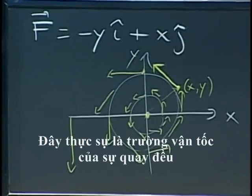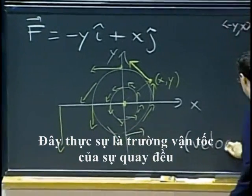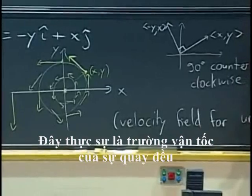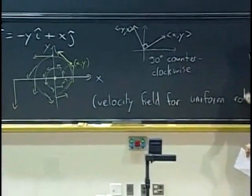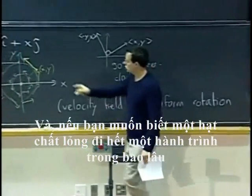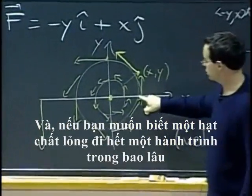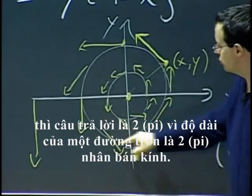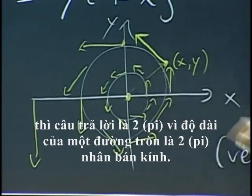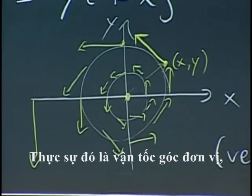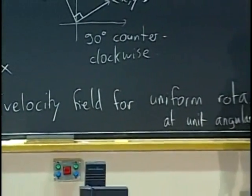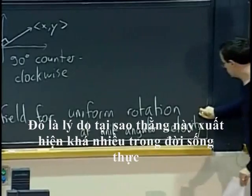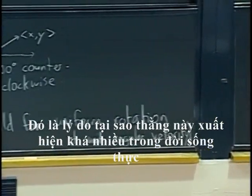it would correspond to a fluid that's just going around the origin in circles, rotating at uniform speed. So this is actually the velocity field for uniform rotation. And, if you figure out how long does it take for a piece, a particle of fluid to go all the way around, well, that will be actually 2pi because the length of a circle is 2pi times the radius. So, that's actually at unit angular velocity, one radian per second, or per unit time.